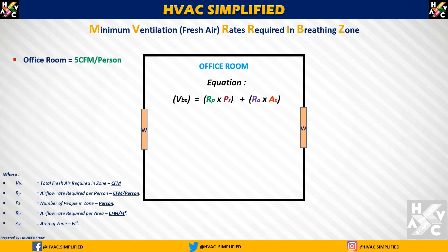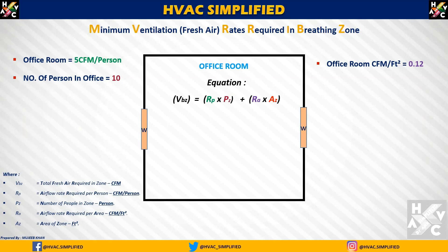Office room की requirement: 5 CFM per person as per ASHRAE 62.1। इसका मतलब यह होता है कि एक person के लिए हमें ventilation की जो requirement देनी होती है वो है 5 CFM। उसी अनुसार office room की CFM per square feet की requirement होती है 0.12, ASHRAE 62.1 के अनुसार। अगर हम इस example में 10 persons consider करते हैं, तो calculated value होती है 5 CFM per person multiply by 10, which is equal to 50 CFM।